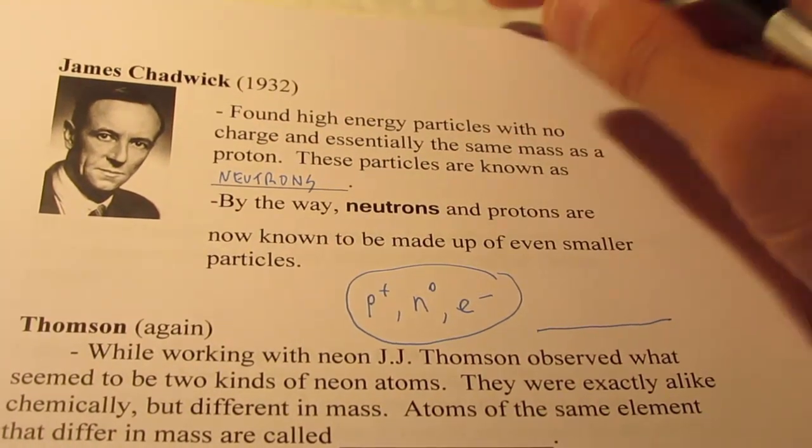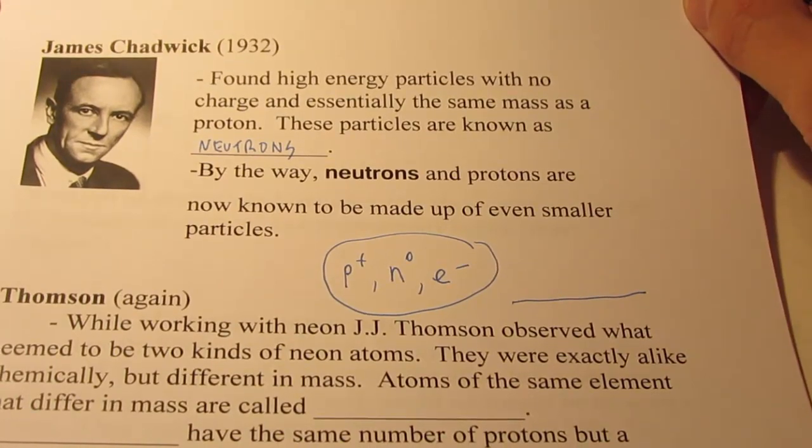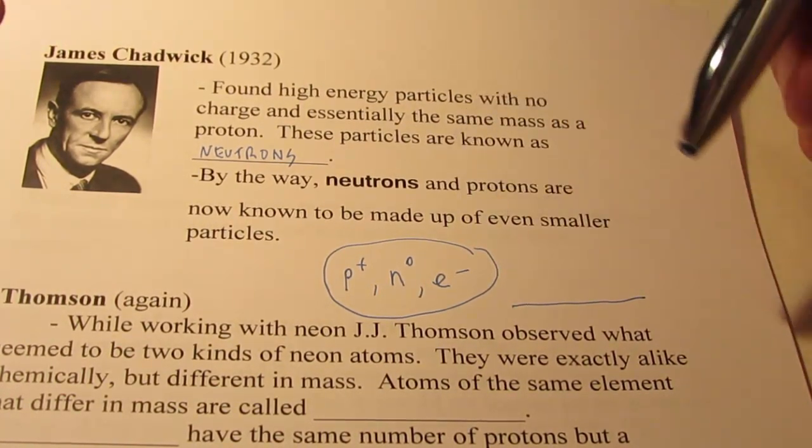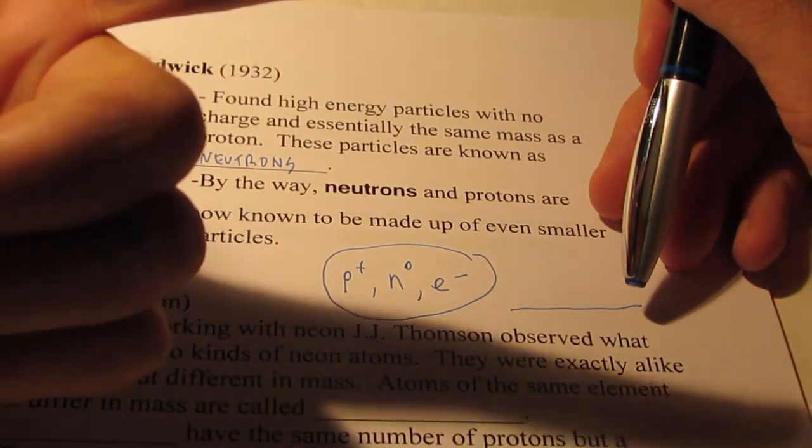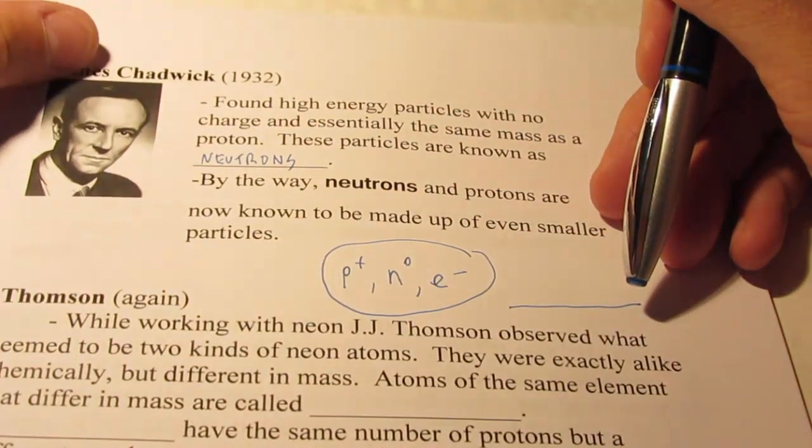All right, welcome back. We're going to begin part three of our atomic theory discussion. We just wrapped up talking about James Chadwick earlier and the discovery of neutrons. So we now have protons, neutrons, and electrons as our three main subatomic particles.